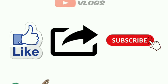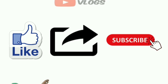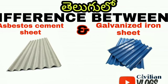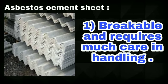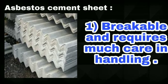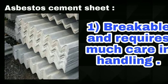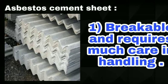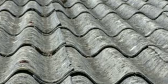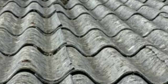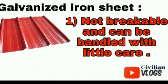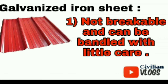First of all, the first point about asbestos cement sheet: it is breakable and requires much care in handling. It breaks easily, so we will have to handle and cover it carefully. For galvanized iron sheet, it is a regular blue color iron sheet.